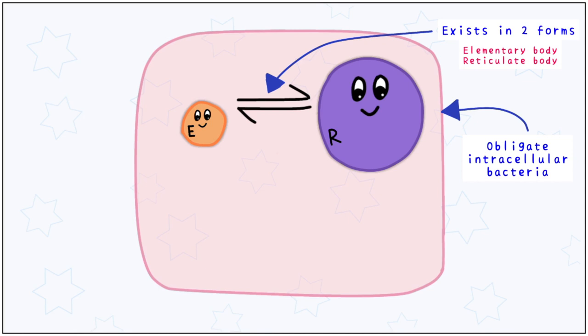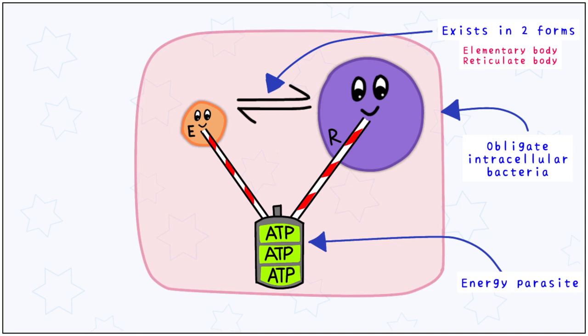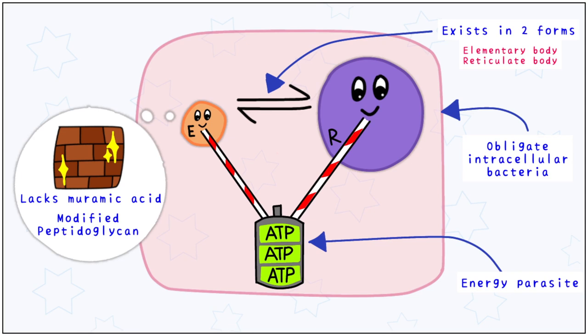Chlamydia cannot make its own ATP and is known as an energy parasite. Chlamydia has a cell wall made of modified peptidoglycan, which lacks muramic acid.